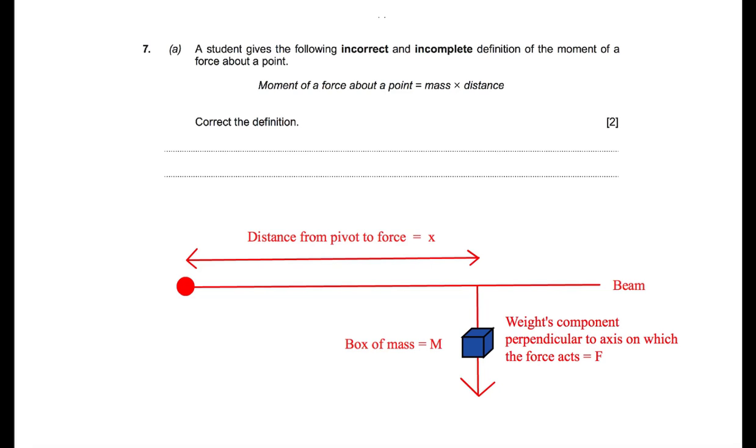Okay, so in this first question, we have a student that gives the following incorrect and incomplete definition of the moment of a force about a point. He says that the moment of a force around a point is equal to mass times distance, so we need to correct this definition. In the diagram which I drew here, I have a pivot here, a beam here, and on that beam hangs a box of mass m.